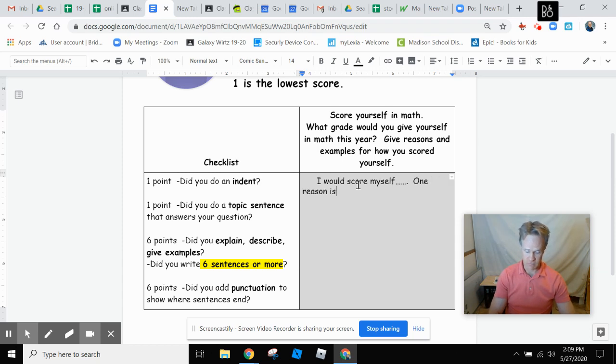One reason is—give a reason. One reason is because I tried really hard. For example, there's an example of that reason number one. Give an example of trying hard.